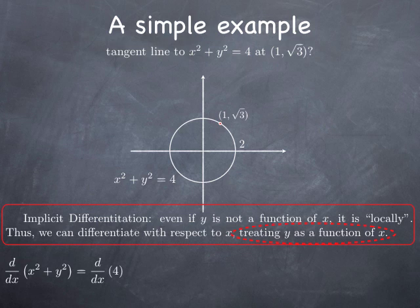So we differentiate both sides of x² + y² = 4 with respect to x. On the right-hand side, the derivative of 4 is 0. On the left-hand side, differentiating x² gives 2x. When I differentiate y², I treat y as a function of x, so y² is the square of a function, and by the chain rule I get 2y · (dy/dx). This dy/dx is the rate of change of y with respect to x, treating y as a function of x.